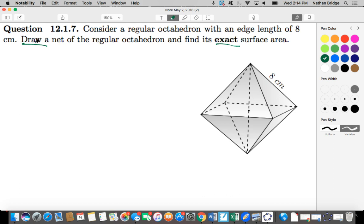So let's start with this net, John. I think that a good place to start is to think about this octahedron in terms of two square base pyramids. So here would be one square base pyramid. There's the square base.